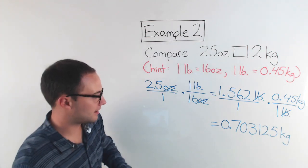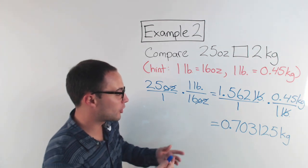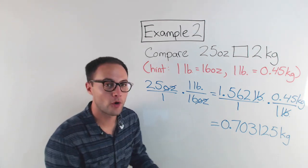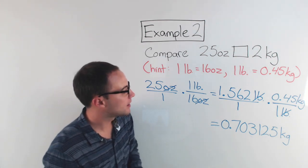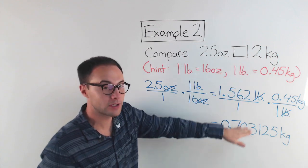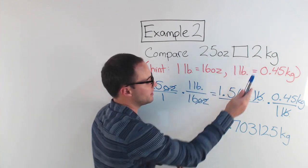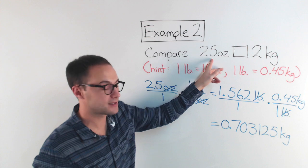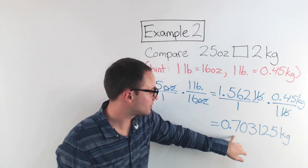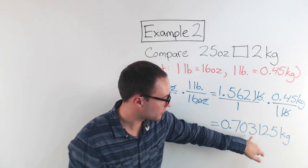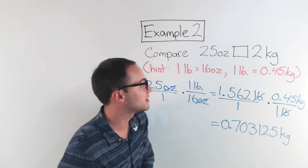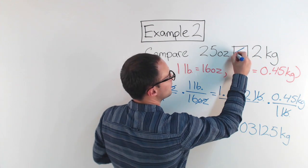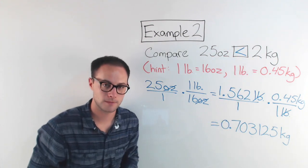So not quite one whole kilogram, less than a kilogram. So now if I'm comparing, remember my original question, I'm trying to compare these two. I know 25 ounces is the same as 0.703125 kilograms, which would mean that is less than 2 kilograms. Here are some to try on your own.